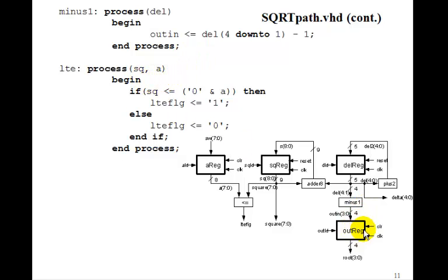And then that goes into the output register. Our little comparator here, less than or equal. If square is less than or equal to A, we'll add a leading 0 to make this 8-bit A 9 bits, to compare it to the 9-bit square. Then less than or equal flag equals 1, else it's 0. So that's our little comparator.